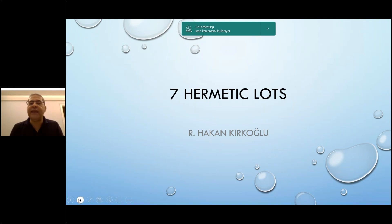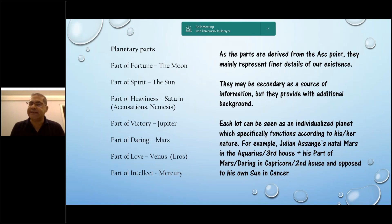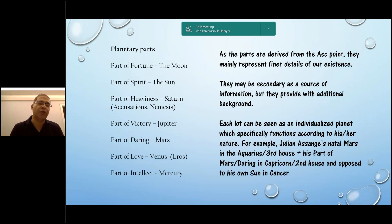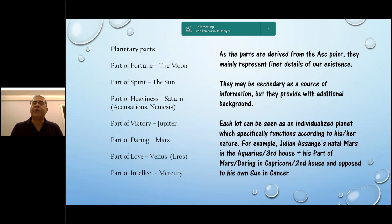We have a point for each planet, so we have planetary parts — we can call them parts, lots, or points. Each of the seven planets has a part in our natal chart or in any chart. One of them is the Part of Fortune, which we use most of the time, and it belongs to the Moon. In this lecture I'm going to introduce how to use them in a practical way and how to apply these notions in a consultation or in practice.